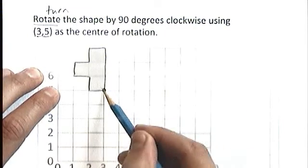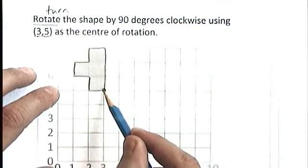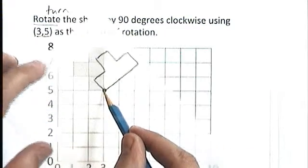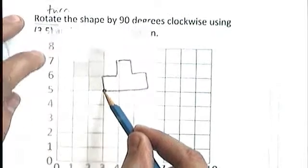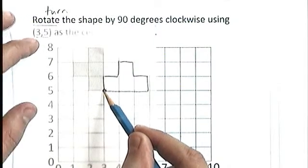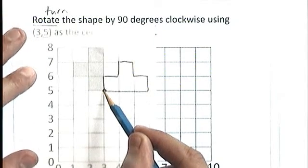As I said, keep your pencil at that point there, and we're going to do a 90 degree turn clockwise. And that is where your shape needs to end up.